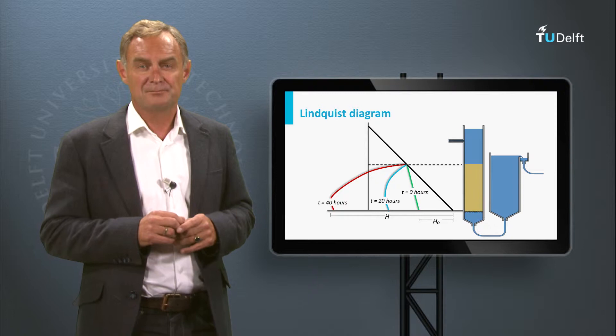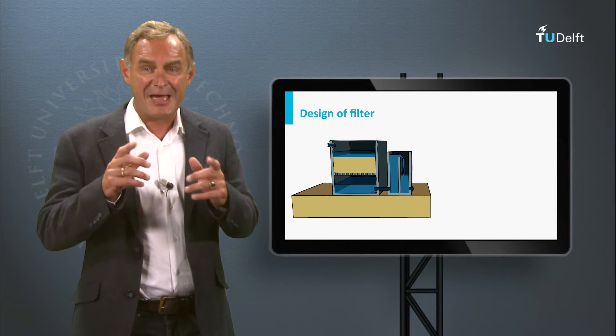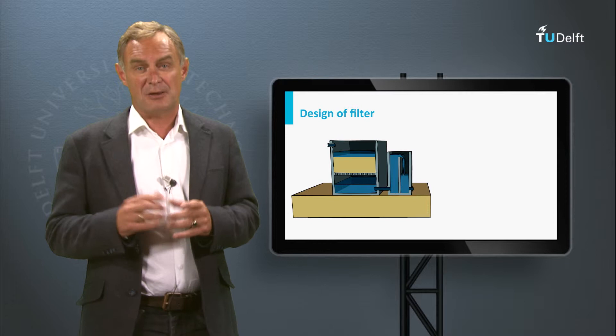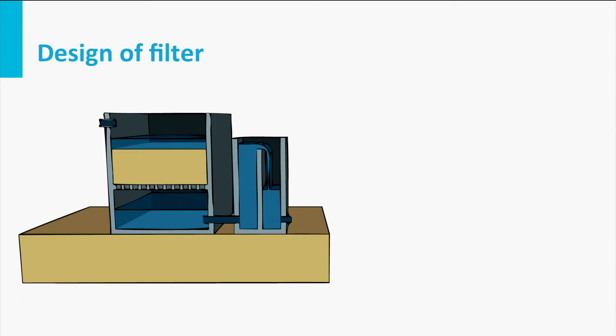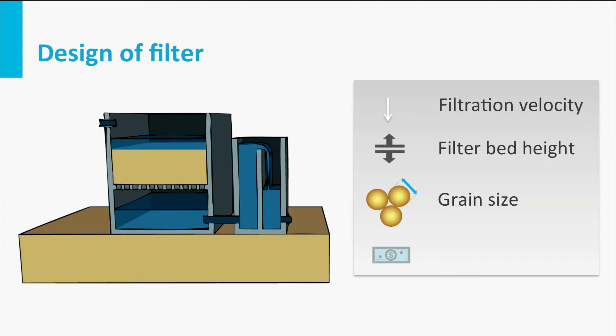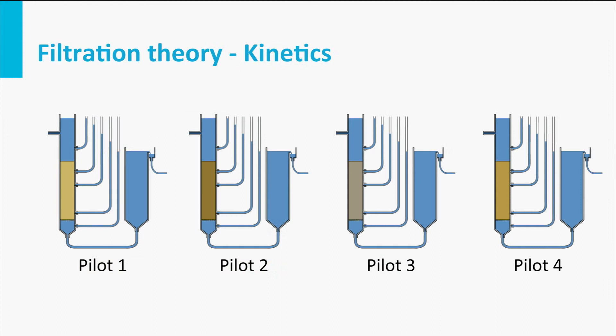For the design of a filter, an optimum must be found such that at the end of the filter run time, the water quality still meets high standards, while the maximum allowable filter bed resistance is reached. Typical filter run times are 1 to 2 days. Different combinations of filtration velocity, filter bed height, and grain size can fulfill these requirements, and economic factors determine the final design.